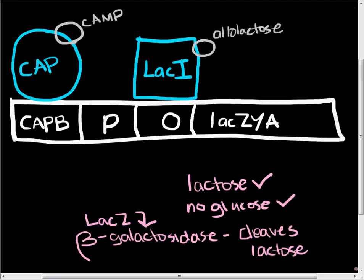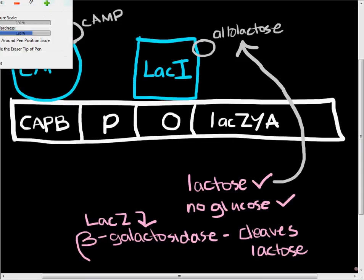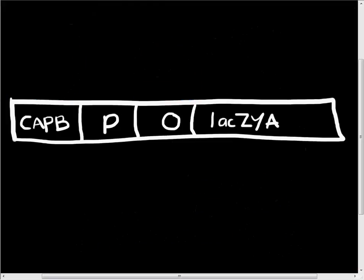Let's start with the lacI system, which is involved in sensing whether or not there is lactose. If there is lactose available in the cell, then there will also be allolactose, and this allolactose will be able to bind to the lacI protein. The lacI protein is produced by the lacI gene, which is located upstream of the lac operon.